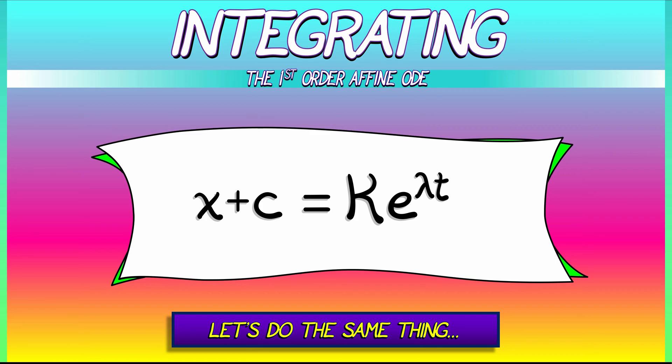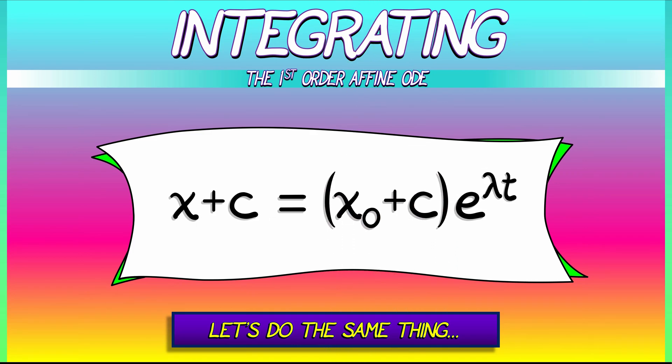That has to be equal to what? On the right, we plug in t equals zero. That just gives us K. That means that capital K is really x naught plus c. So that x plus c is quantity x naught plus c times e to the lambda t.